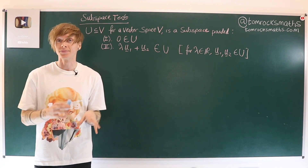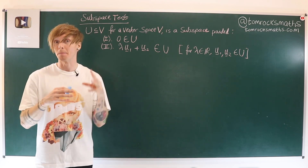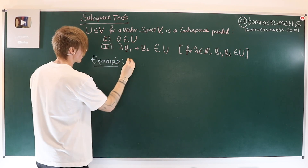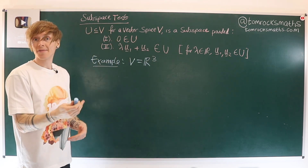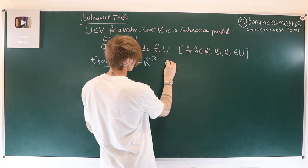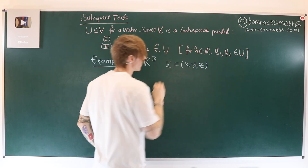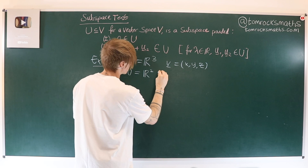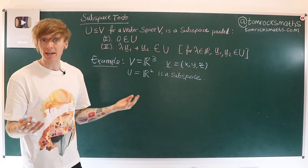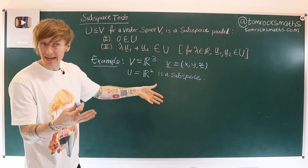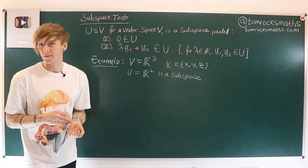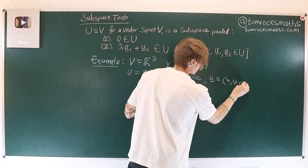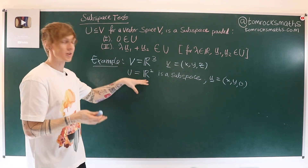Let's go through three examples using the subspace test. Example one: take the vector space V to be R³, so a general vector v is (x, y, z) with three real entries. I claim that U equal to R² — the xy-plane — is a subspace. A general element of U would be (x, y, 0) since we always have zero in the z-coordinate.